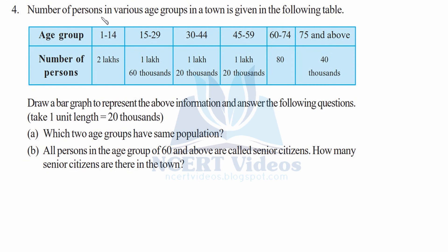Question four. The number of persons in various age groups in a town is given. The table shows the age group and the number of persons falling under each age group. Draw a bar graph to represent the above information and answer the following questions. Take one unit length equal to 20,000. Part A: Which two age groups have the same population? Part B: All persons in the age group 60 and above are senior citizens — how many senior citizens are there in the town?